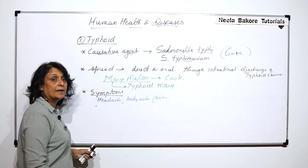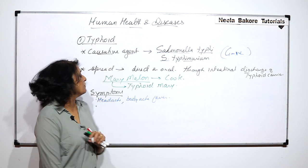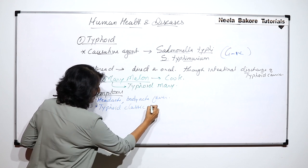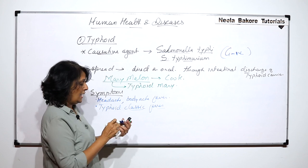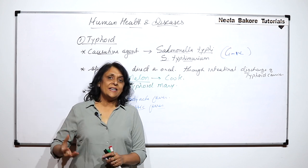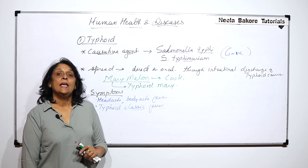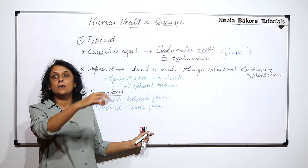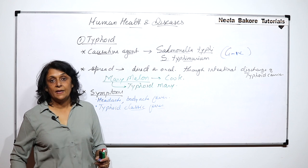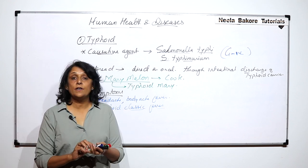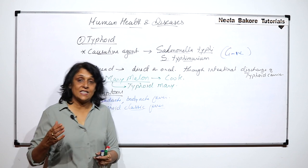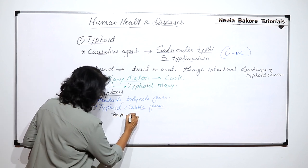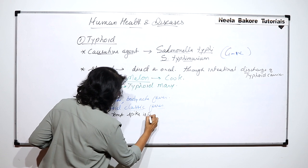But the fever is the classic typhoid fever. In various diseases the pattern of fever varies. In case of typhoid, the fever body temperature rises — or we say temperature spikes — are seen in the afternoon.